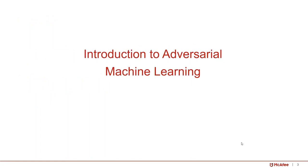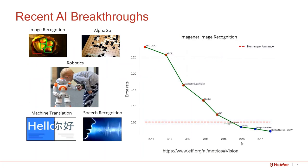Let's give an introduction about adversarial machine learning. As you all know, machine learning and artificial intelligence have had breakthroughs in recent years, including image recognition, AlphaGo, robotics, machine translation, and speech recognition. On the right, you can see that for ImageNet recognition, especially after 2015, the performance of AI and machine learning technology has exceeded human performance.